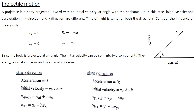In today's class, let's analyze projectile motion, which is very similar to the two-dimensional motion. As you know, a projectile is a body projected upwards with an initial velocity at an angle with the horizontal. In this case, the velocity and acceleration will have two components: the x-component and y-component, and these two are evidently different.